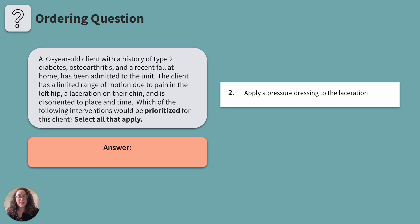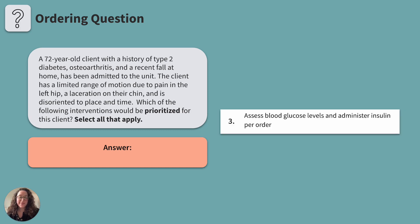Applying a pressure dressing unnecessarily to this wound could potentially worsen the wound and delay appropriate healing or treatment. Third, assess blood glucose levels and administer insulin per order. Why might these interventions be important to this client? To maintain glycemic control. Because they have a history of type 2 diabetes, injuries such as a fall can put stress on the body which can affect blood glucose levels. It is important to monitor and manage blood glucose to prevent complications for this client.